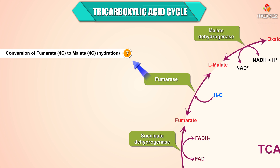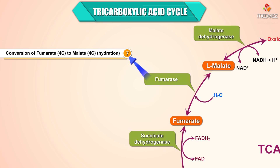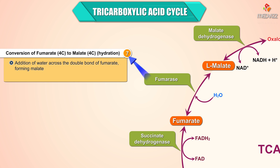Step 7 is the conversion of fumarate to malate by hydration. Water is added across the double bond of fumarate to form malate. The enzyme fumarase is a lyase.